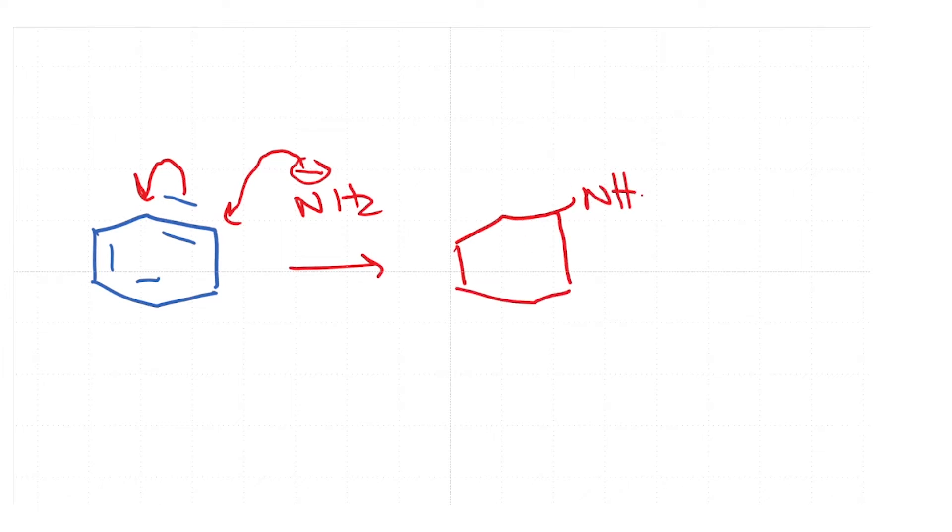So benzyne intermediate is very interesting and this benzyne can then further react with NH2 minus and it produces the carbanion once again. Keep in mind that these are fairly extreme conditions under which this reaction can occur and this eventually picks up a proton and gives you the final product.